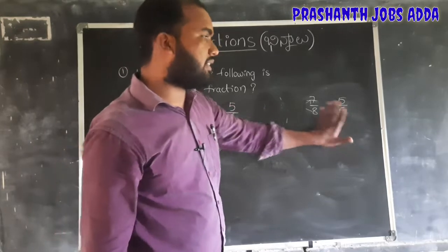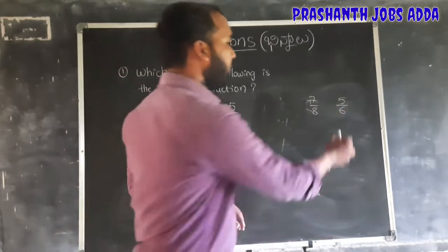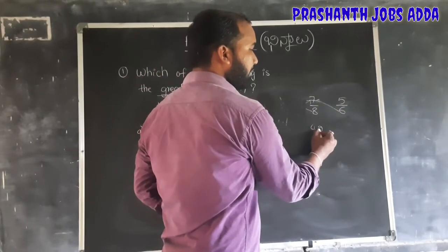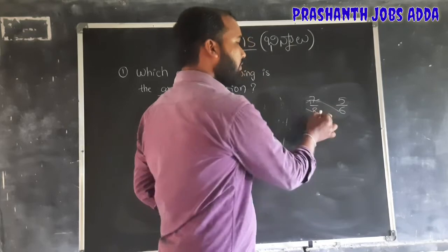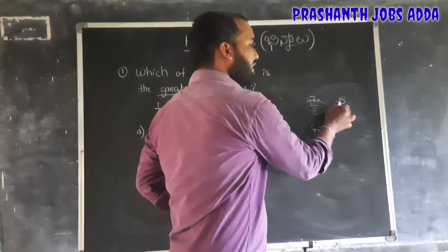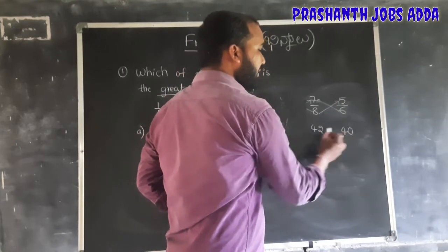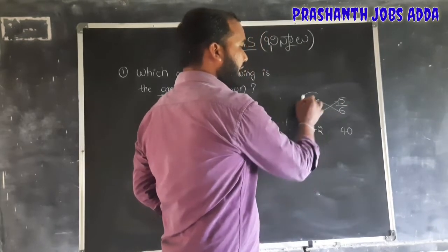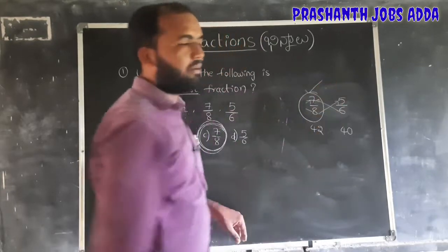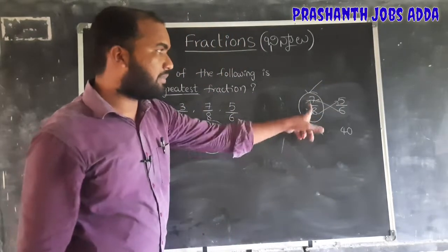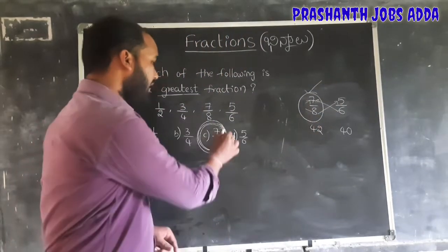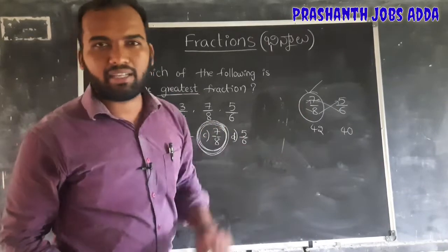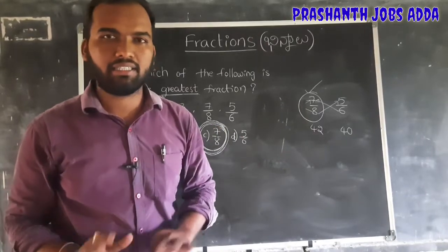Now compare 7 by 8 and 5 by 6: 8 times 5 is 40 and 6 times 7 is 42. Since 42 is greater, 7 by 8 is the biggest fraction. So the cross multiplication method confirms 7 by 8 is the greatest fraction.